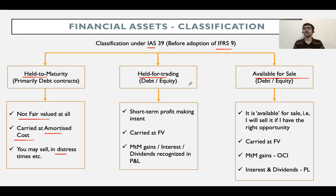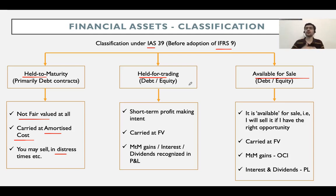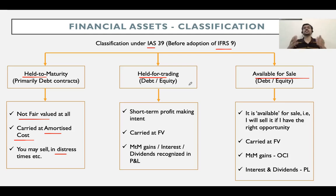The second category is held for trading. Again, the name suggests these are financial assets which you have purchased with a short-term profit-making intent or for the purpose of speculation. Short-term typically means anything less than 12 months. For example, if I'm buying an equity share today with an intent to sell it a week, two weeks, or a month later, that is held for trading. Similarly, a debt security purchased with the intent of reselling it on the same day or one month later is also held for trading.